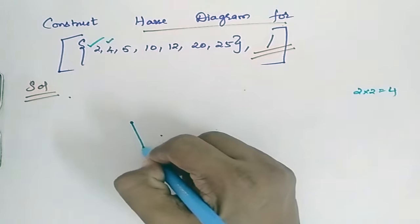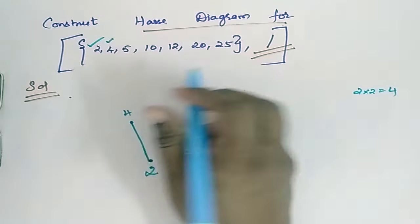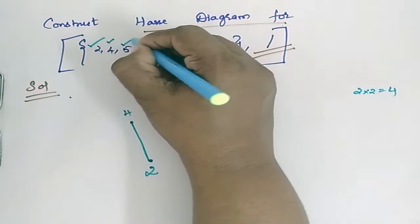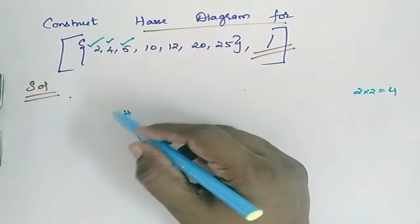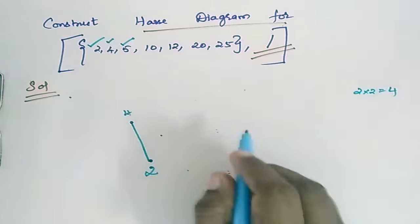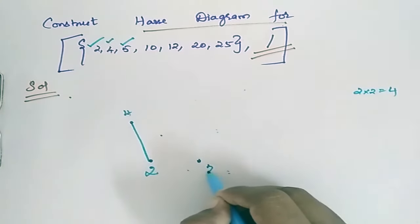So you can have 4 and H 2 4. Then check out with 5. Whether 4 divides 5, no. 2 divides 5, no. So have 5 separately.